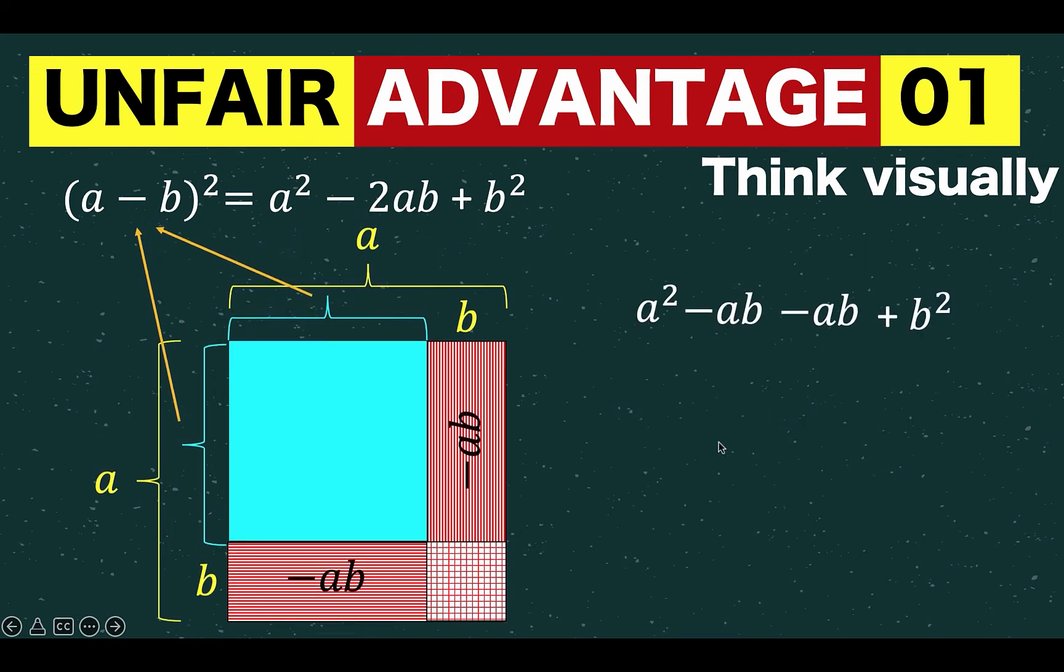And simplifying this, we arrive at a squared minus 2ab plus b squared, which is now this right side of the equation.